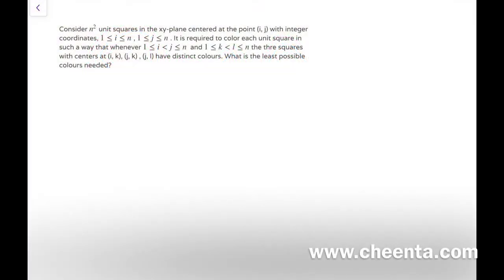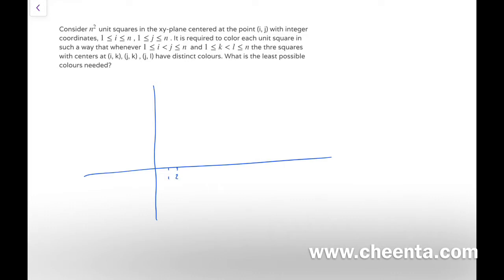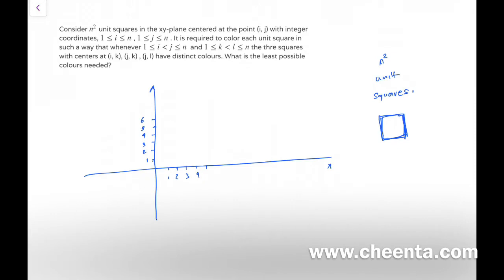Hello. In this discussion we will talk about the fourth problem of RMO 2017. The problem says that we have n² unit squares in the xy plane centered at the point i comma j. So let's quickly draw the xy plane. We have n² unit squares — unit squares are basically squares of side length 1 — centered at the point i comma j.